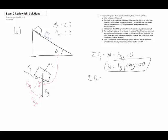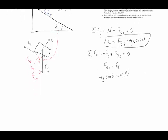In the x direction, the force of friction minus fgx equals zero, so fgx equals the force of friction. That gives us mg sine theta equals mu_static times the normal force. We already found the normal force, so plugging it in: mg sine theta equals mu_static times mg cosine theta.